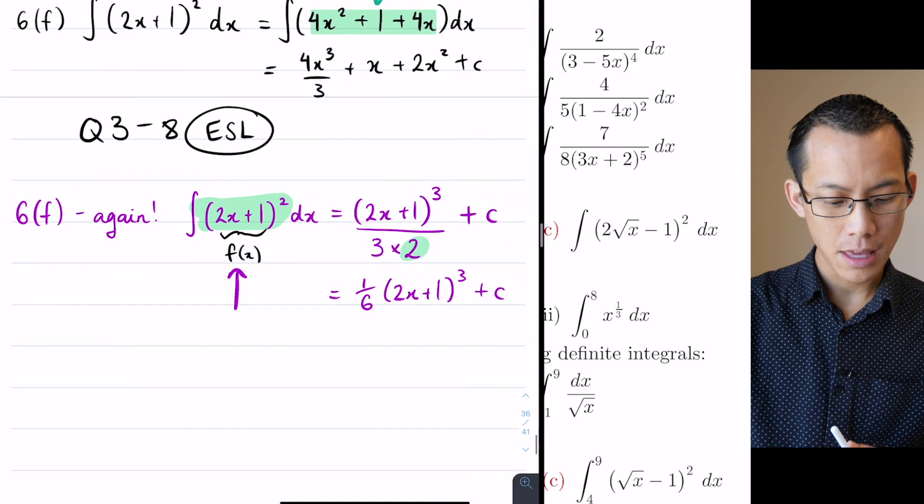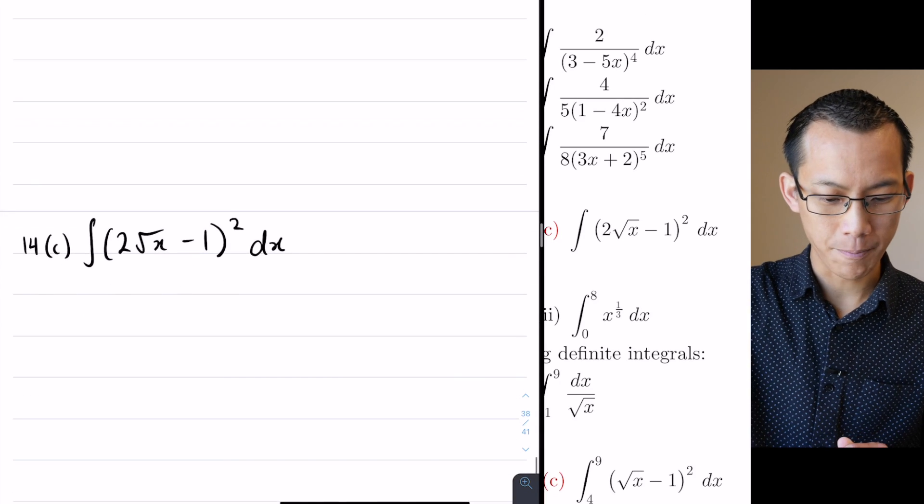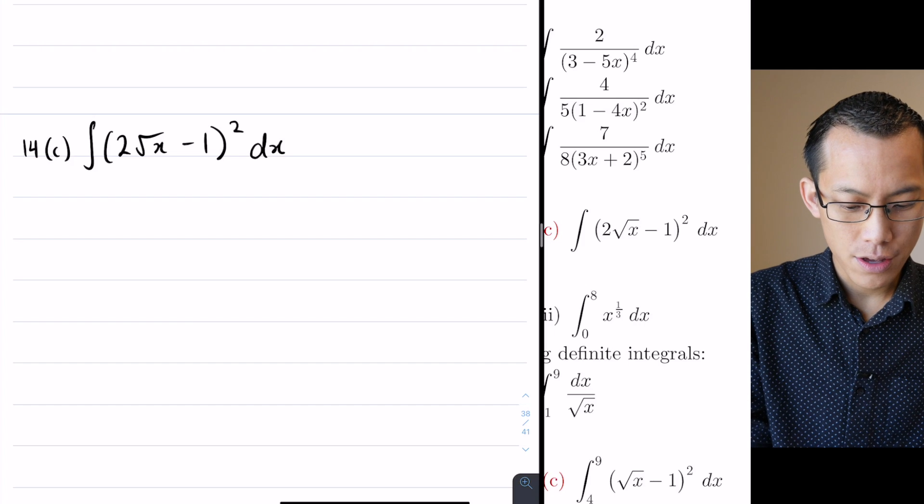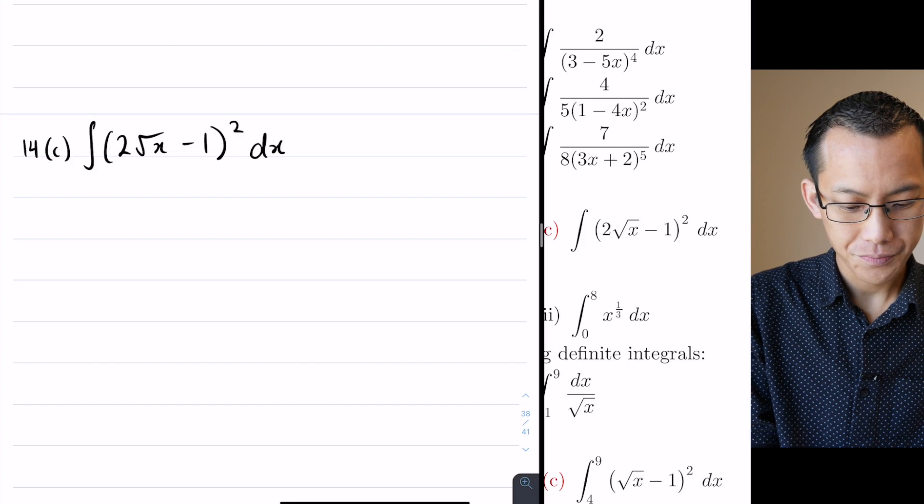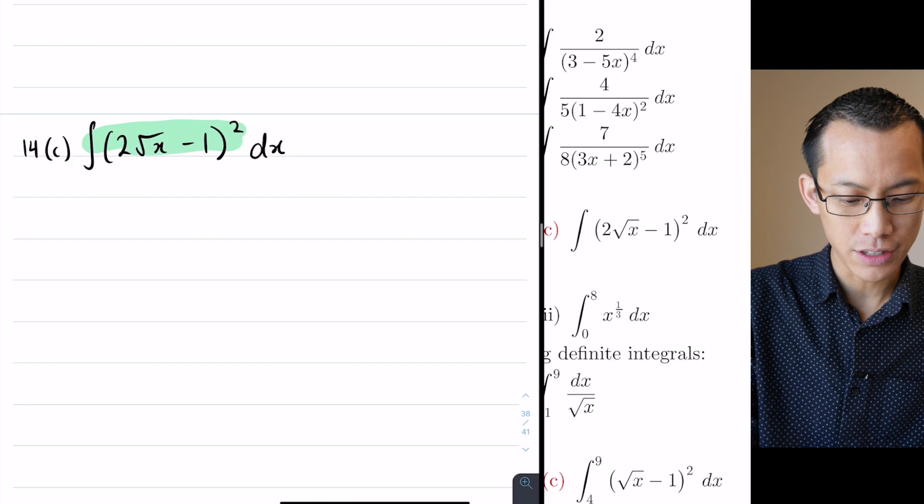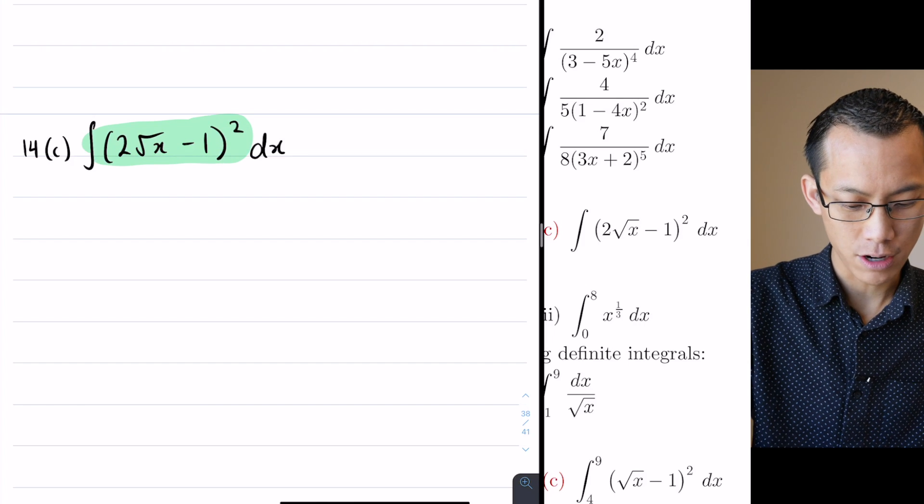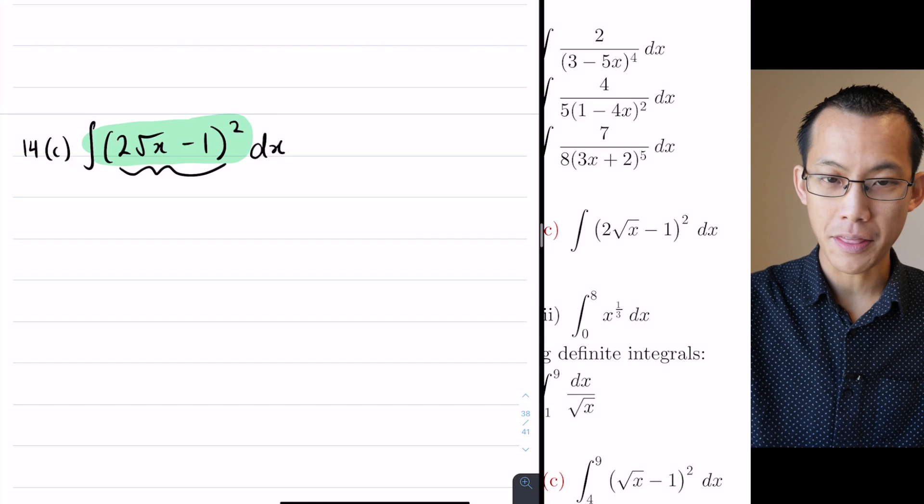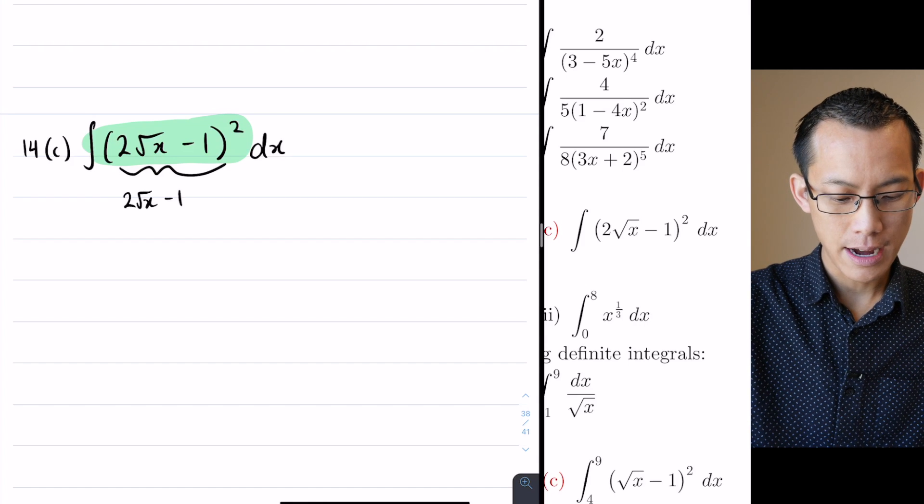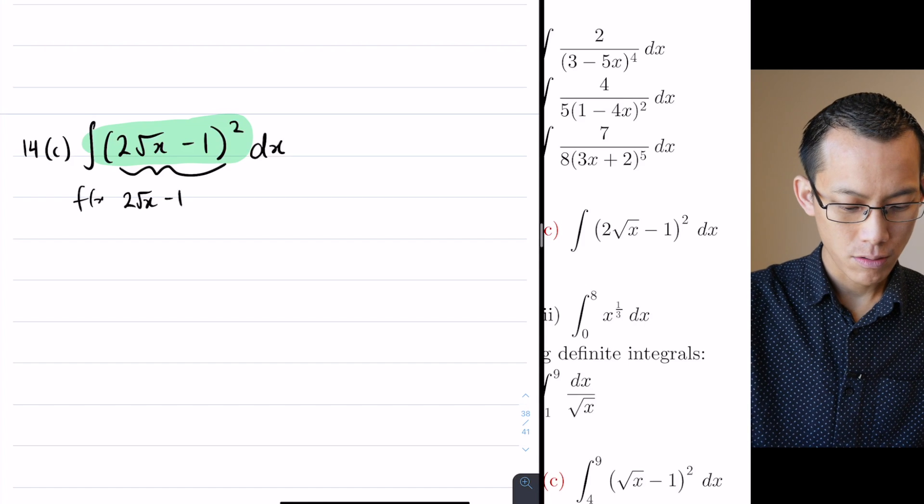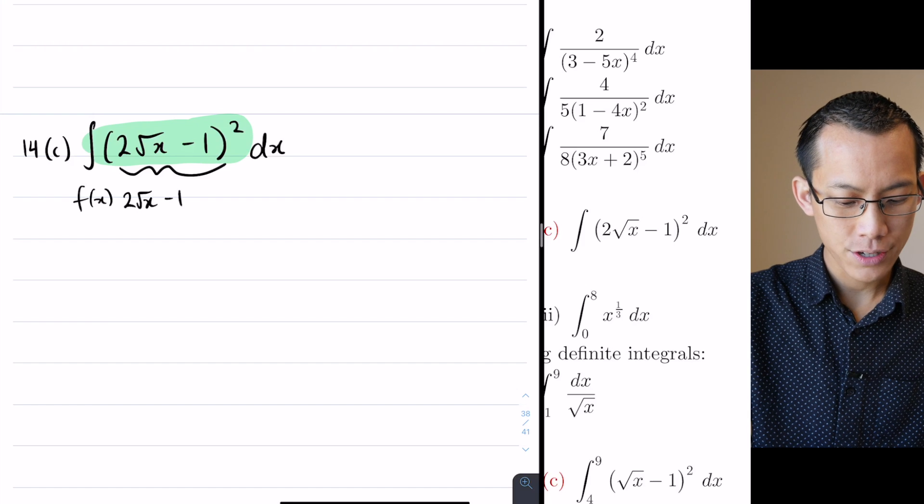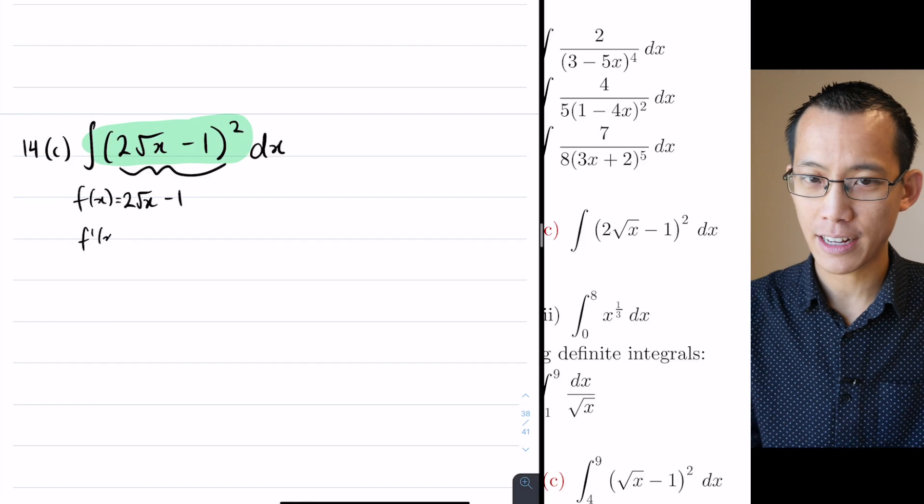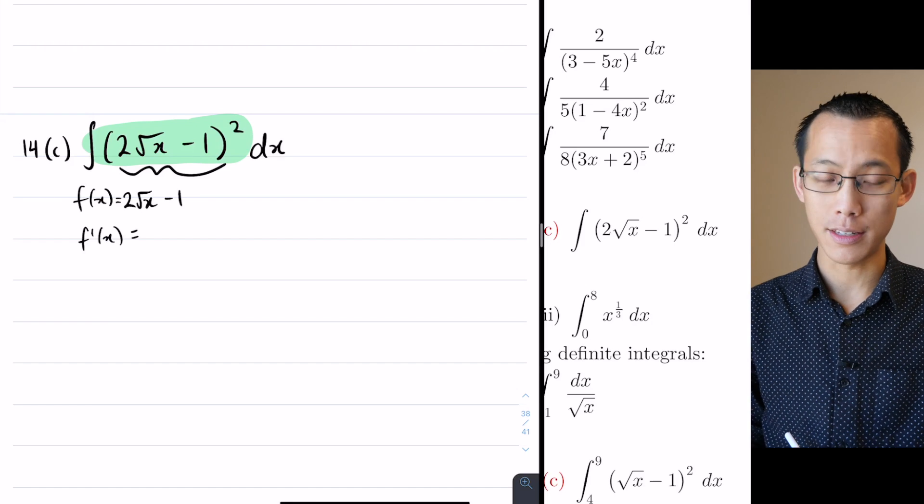When you have a look here though, you've got something quite different. What's the inside function here? If this is your integrand, then your inside function that's being squared is 2 root x minus 1. That's your f of x. Now if that's f of x equals, what would f dash be? Well, hopefully it's now clicking for you. This is not just going to be a constant, is it?